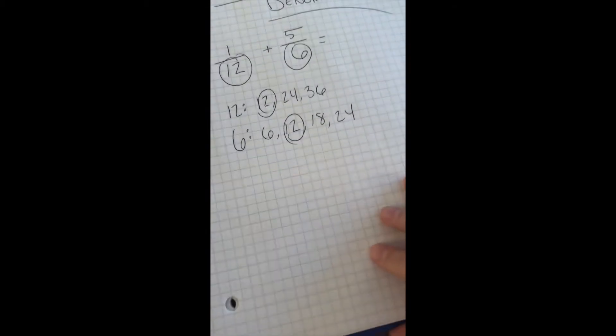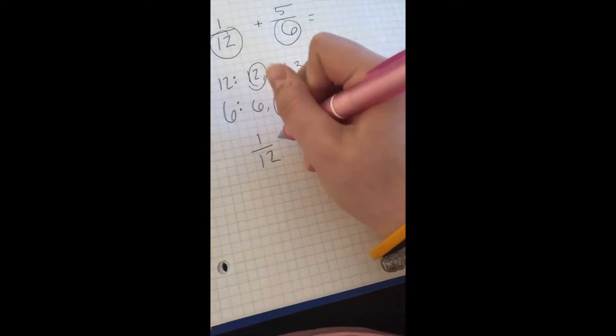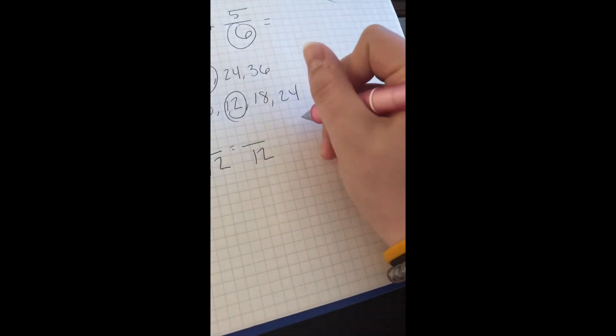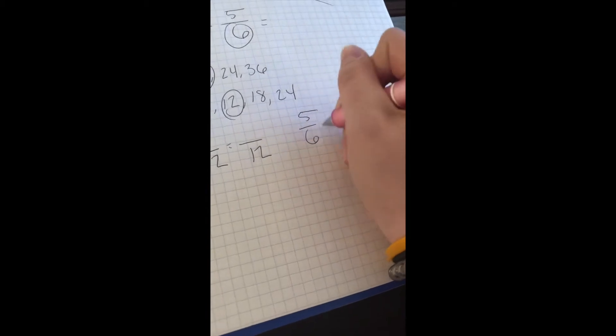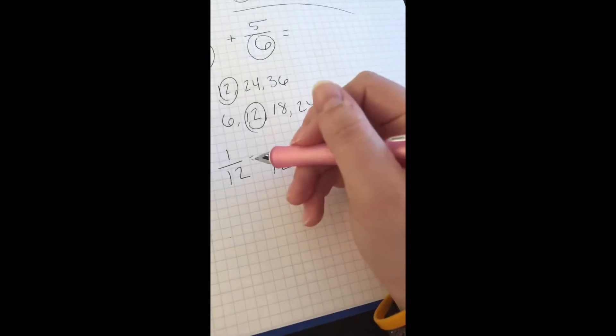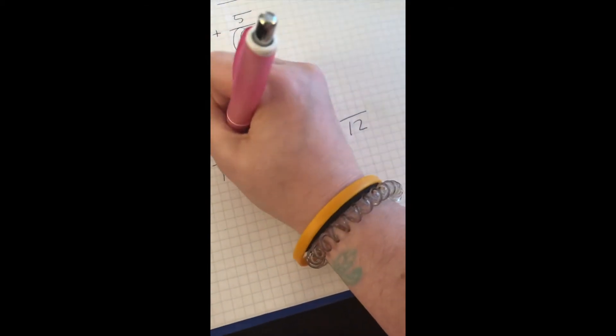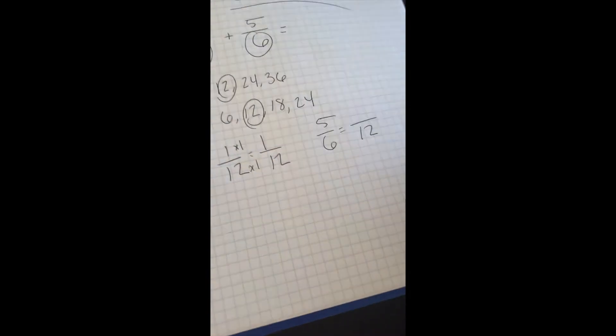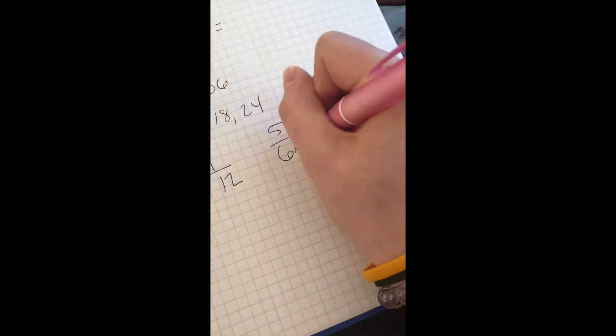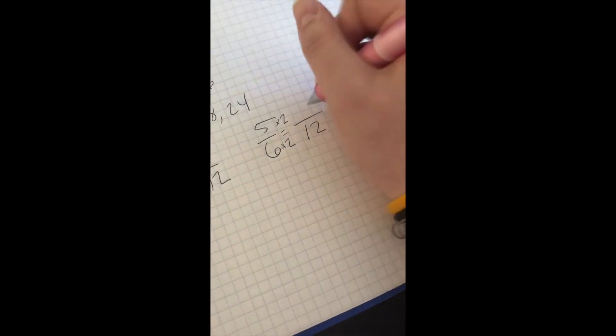So that needs to be your new denominator. So you're going to do 1 twelfth is equal to something with 12, and then same thing, 5 sixths is equal to something with 12 as the denominator. And then, just like you've been doing, 12 times what gets you to 12, which is 1, so you do the same thing to the top. So that would be 1 twelfth, and then 6 times what gets you 12, which would be 2, and then you have to multiply the top by 2 also. So 5 times 2 would be 10.